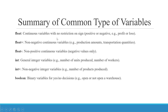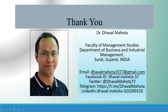Summary of common variable types: Float is a continuous variable with no restriction on sign — fractions, positive, and negative values are all possible; example use is profit or loss. Float plus is a non-negative continuous variable; example use is production amounts or transportation quantities. Float minus is a non-positive continuous variable — negative values only, fractions allowed. Integer is a general integer variable — fractions not allowed; example use is number of units produced or workers. Integer plus is non-negative integer; example use is number of products produced. Boolean is a binary variable for yes/no decisions; example use is whether to open a warehouse.